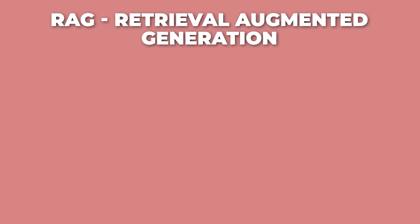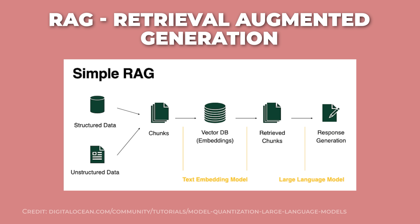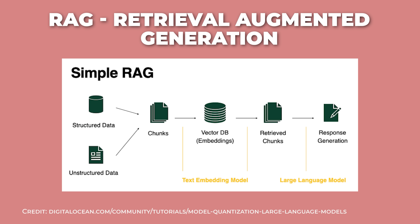Now, even the best models sometimes make stuff up or don't know recent information. That's where RAG comes in — Retrieval Augmented Generation. Instead of just relying on what the model memorized during training, it first looks up relevant documents, maybe from a database, then writes its answer using that fresh information. This reduces made-up facts and keeps answers current without having to retrain the whole model.